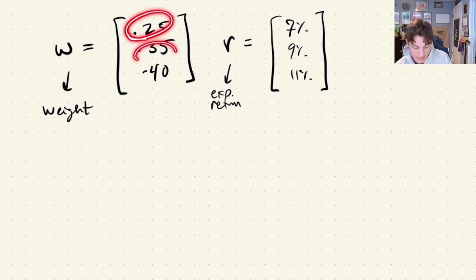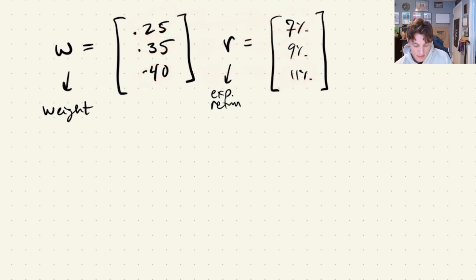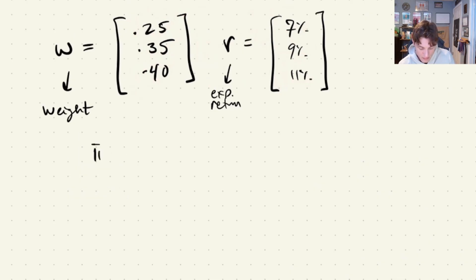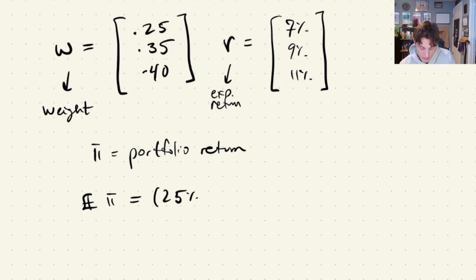We're given a set of vectors: the first is the stock weights in your portfolio and the second is the corresponding expected returns. To compute the expected portfolio return, if pi is our portfolio return, we simply weight the expected returns by the portfolio weights. Stock one has an expected seven percent return with a weight of 0.25, so we take the product of those two — and the result is the sum product of all weights and expected returns.